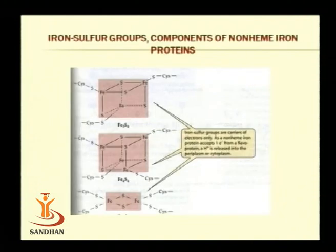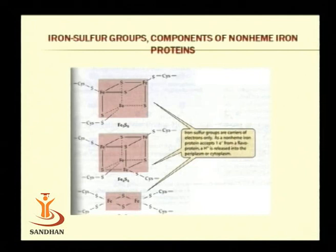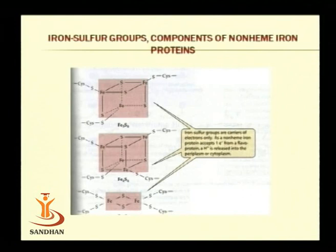The next carrier is iron-sulfur protein, which may be of the 2Fe-2S type, 4Fe-4S type, 3Fe-4S type, or 8Fe-8S type. The 4Fe-4S and 8Fe-8S types produce a cube-like structure, while the 2Fe-2S type has a planar structure. They are joined by covalent bonds to the sulfur of the cysteine moiety. This carrier accepts a single electron upon reduction, while the 8Fe-8S type has two active sites and accepts two electrons.